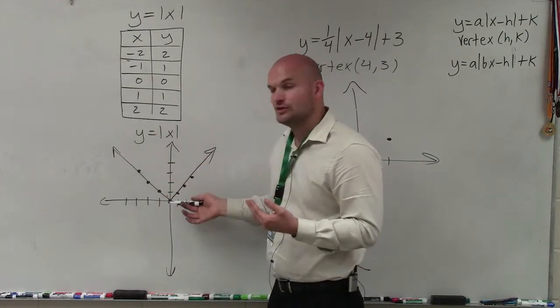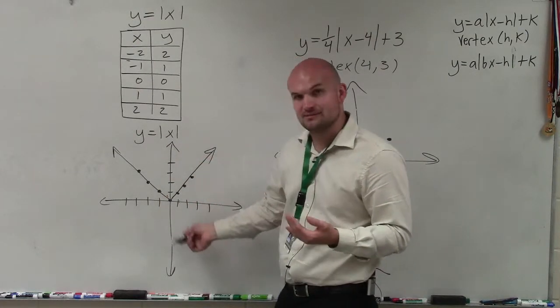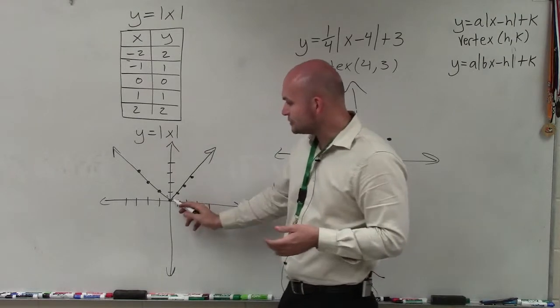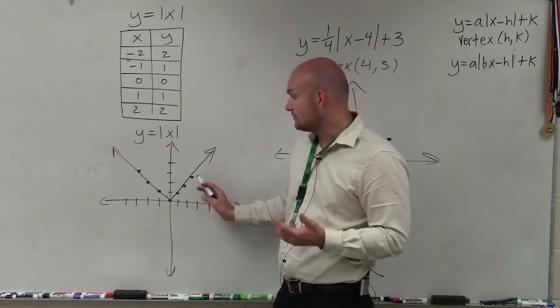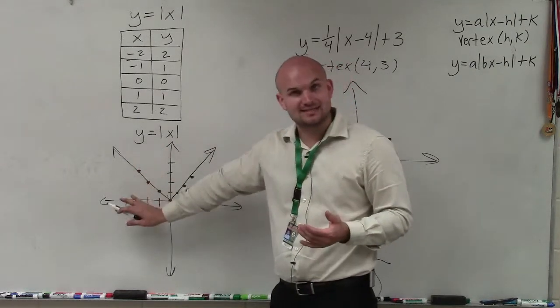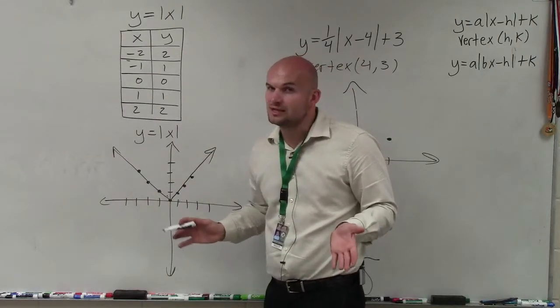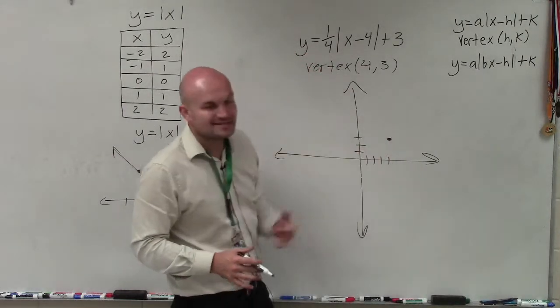Because notice the absolute value graph has an axis of symmetry, right? It's reflexive over the y-axis. So if I can determine two points to the right of the graph, I can reflect that over the axis of symmetry to find two other points to the left. Because I already know the vertex is at the point 4, 3.